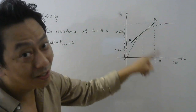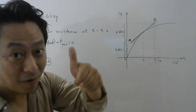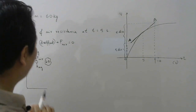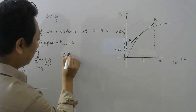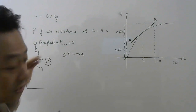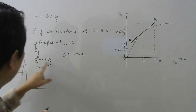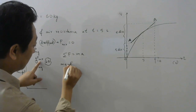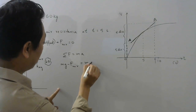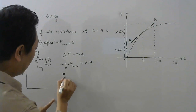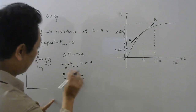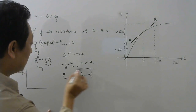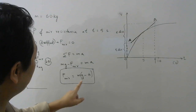Acceleration is the slope of the VT graph. So from this graph we can find acceleration, and from Newton's second law we can calculate air resistance. Applying Newton's law: net force equals ma in the downward direction. Since the net force is downward, mg must be greater than the air resistance. Rearranging, air resistance equals m(g minus a). So this is the formula for air resistance in terms of acceleration.